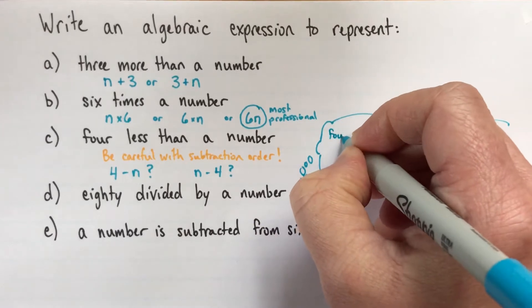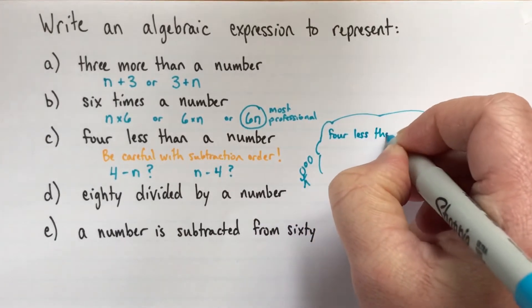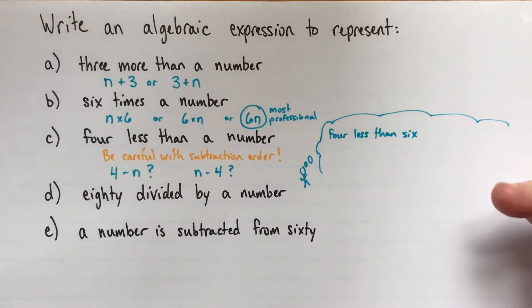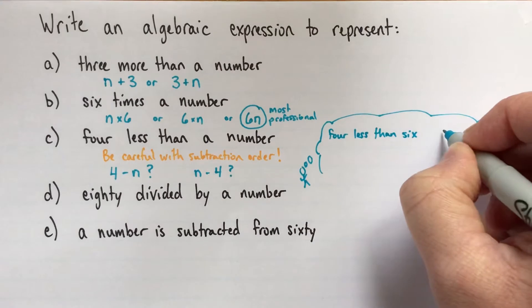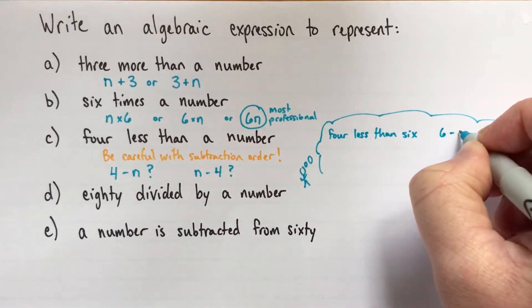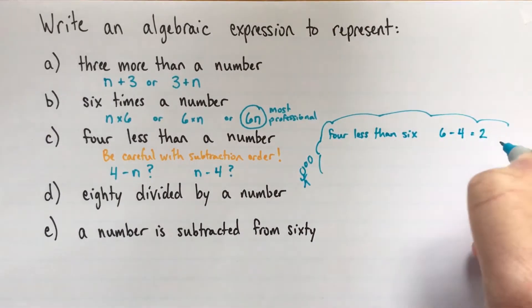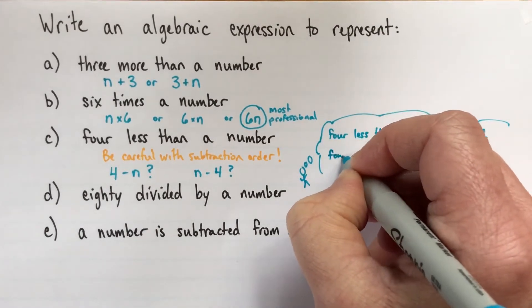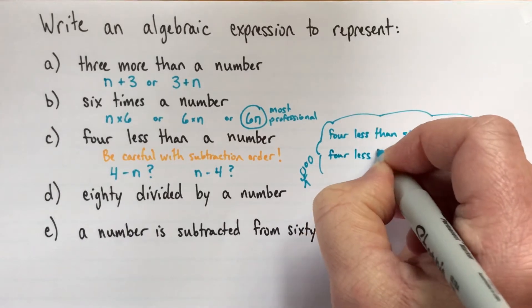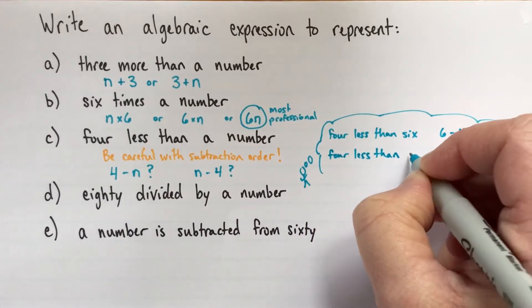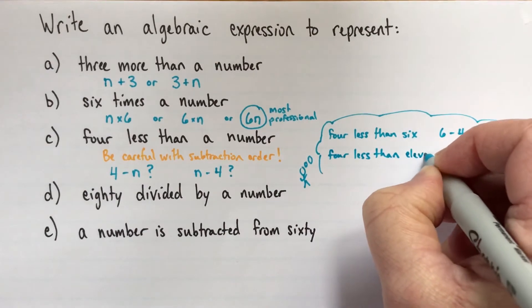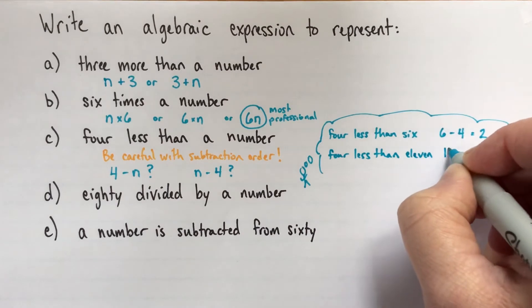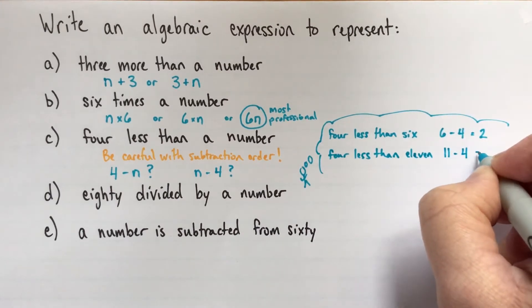So let's do a couple examples. Suppose it was four less than six. What would that be? Well, that's two. And how could we get that? Well, we could do six subtract four equals two. Now, suppose we had another one. Suppose it was four less than, I don't know, say 11.